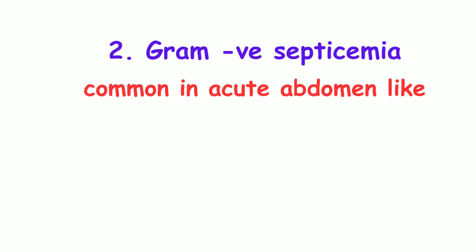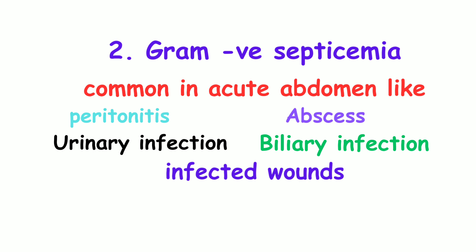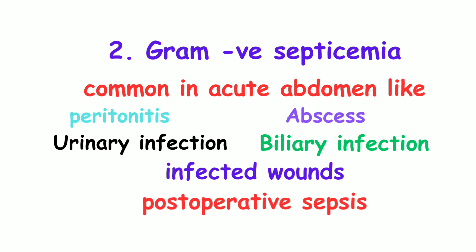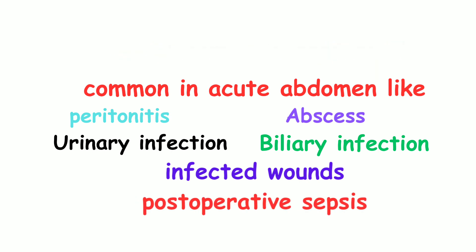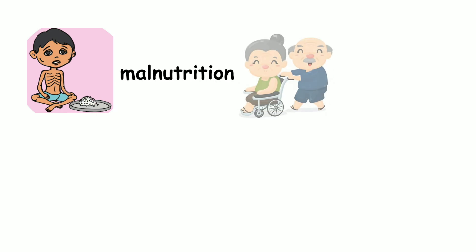The second type is Gram-negative septicemia. It is common in acute abdomen conditions like peritonitis, abscess, urinary infections, biliary infections, infected wounds, and postoperative sepsis. It is commonly seen in malnutrition, old age, and diabetics.